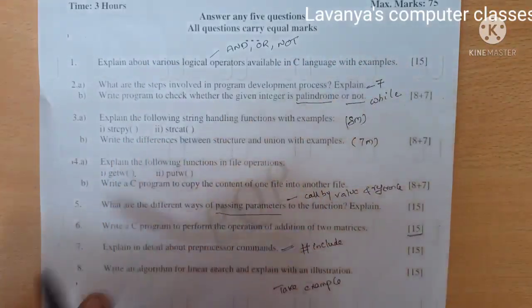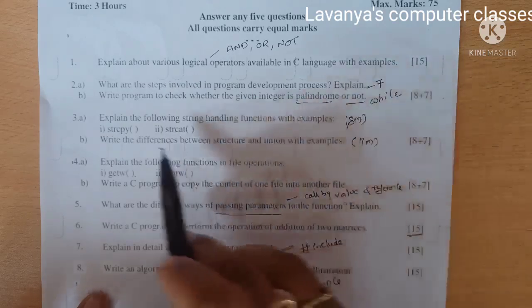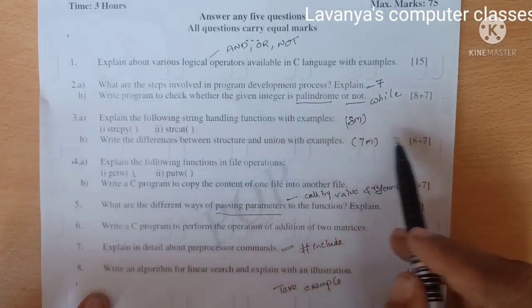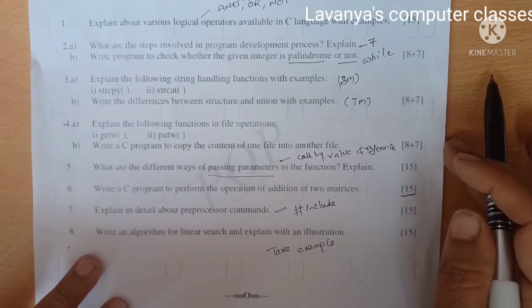The last one is write an algorithm for linear search and explain with an example illustration. What is linear search? What is the meaning of search? Take some numbers and explain each and everything with an example program.